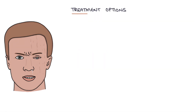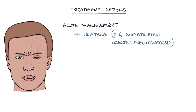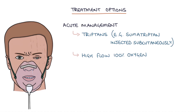So what are the treatment options for cluster headaches? There's the acute management, which aims to improve the symptoms at the time. This can be with triptans — for example, sumatriptan injected subcutaneously at the start of the headache. Another option which often comes up in exams is high-flow 100% oxygen, breathed for 15 to 20 minutes to try and improve the symptoms.